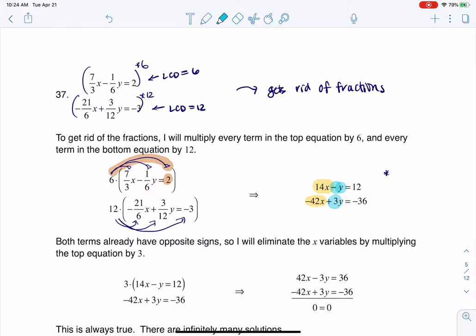But just looking at it, the coefficient in front of Y is negative 1. So that seems like a nice one to multiply. So I'm now going to multiply this equation by positive 3. And when I do that, you see my work down here.